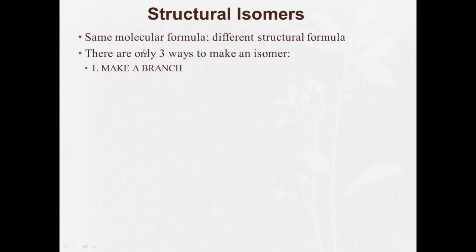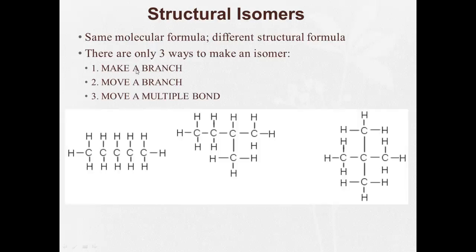Now, there's three ways to make an isomer. You can make a branch, move a branch, or move a multiple bond. So here's three different examples of isomers.